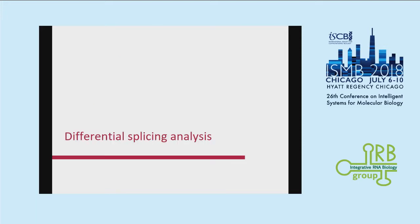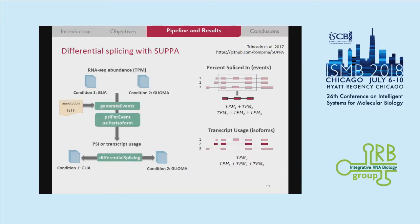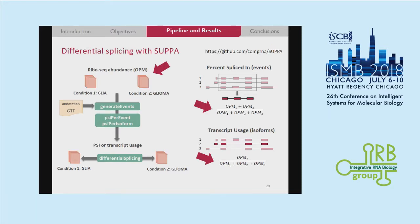Now I'm going to explain how we perform the differential splicing analysis. We use SUPPA, a software developed in our group that takes RNA-seq abundance values in TPMs and is able to calculate the difference between two conditions in the percent splicing value, or PSI, in the case of events, and transcript usage in the case of isoforms. Our two conditions are glia and glioma from the human and mouse datasets. This software can be easily used with our ribo-seq data, since we have calculated the OPM value, which is similar to TPM, and we can perform the same calculations just changing the TPM for the OPM.